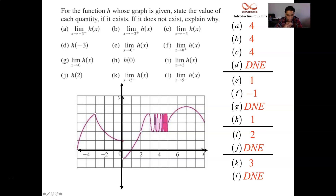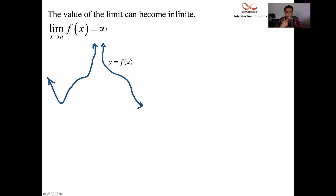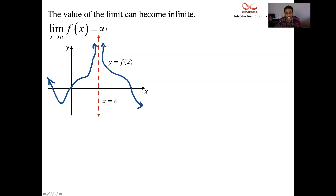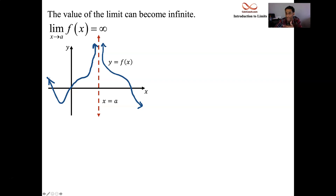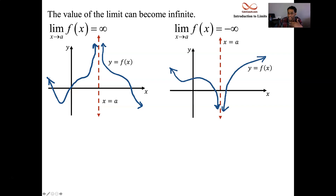Next, let's look at what it means for the limit to be infinite. Here's a graph: as x goes to a, the function from the left and from the right are both increasing without bound. They agree — the left-hand limit and the right-hand limit are both headed towards infinity. Similarly, if it's minus infinity, another function would show values diving down and getting increasingly small.